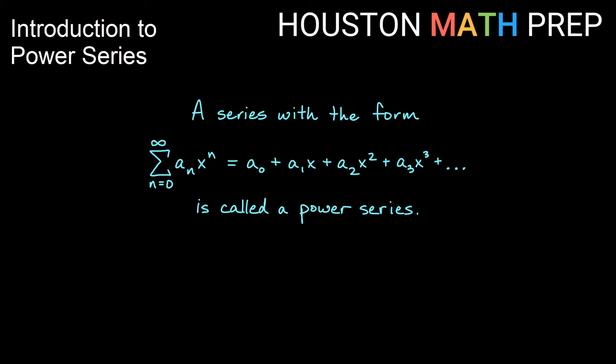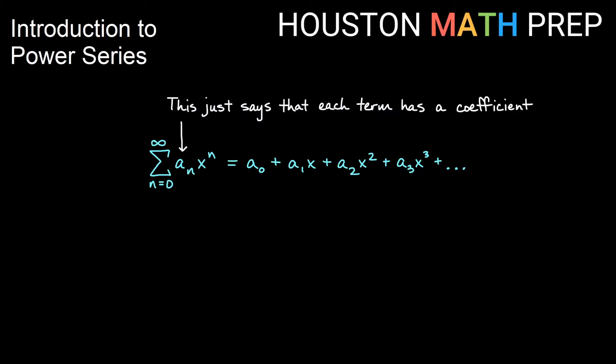Our a sub n's are just the coefficients for each term, so each term has a coefficient in our series. And the x to the n part tells us that each term is going to have a whole number that is non-negative, a whole number power of the variable, usually x.